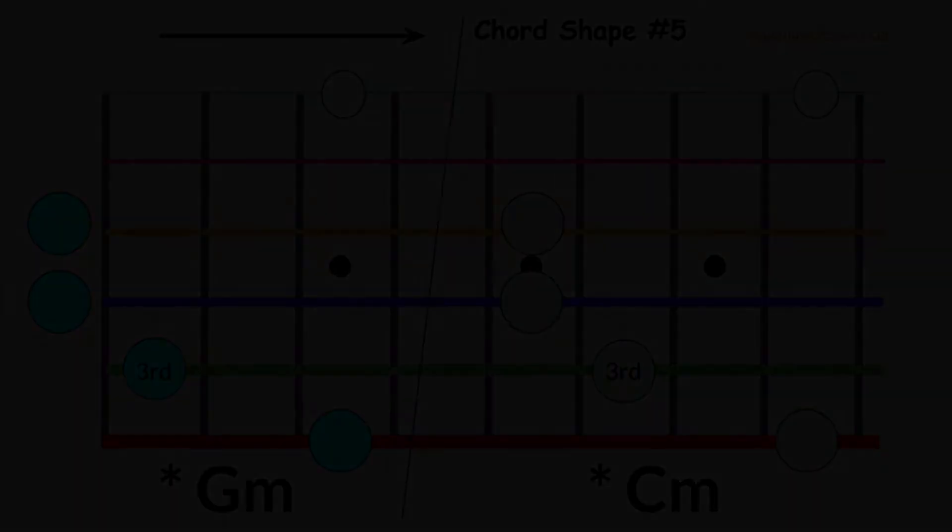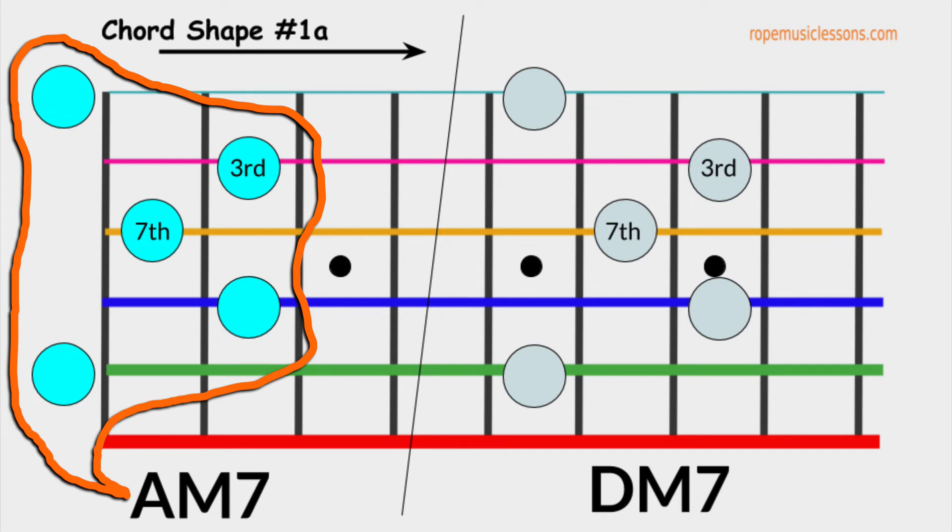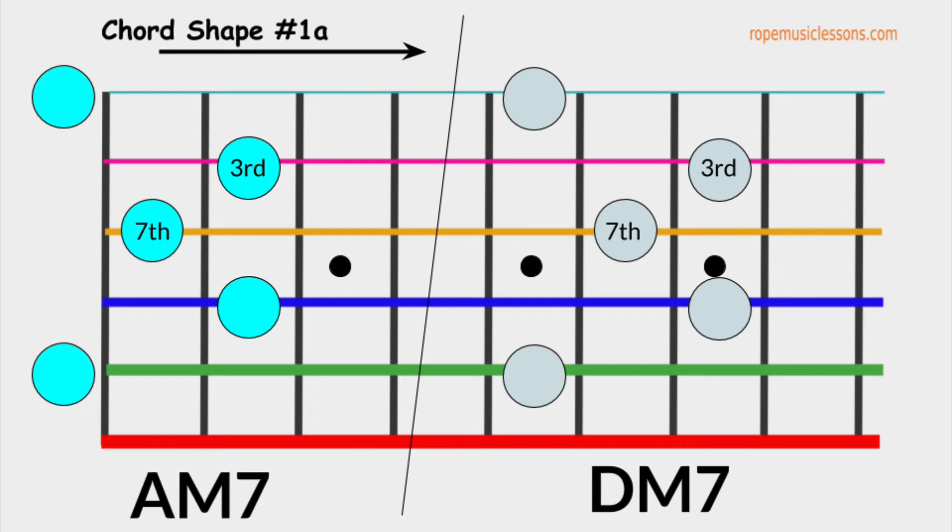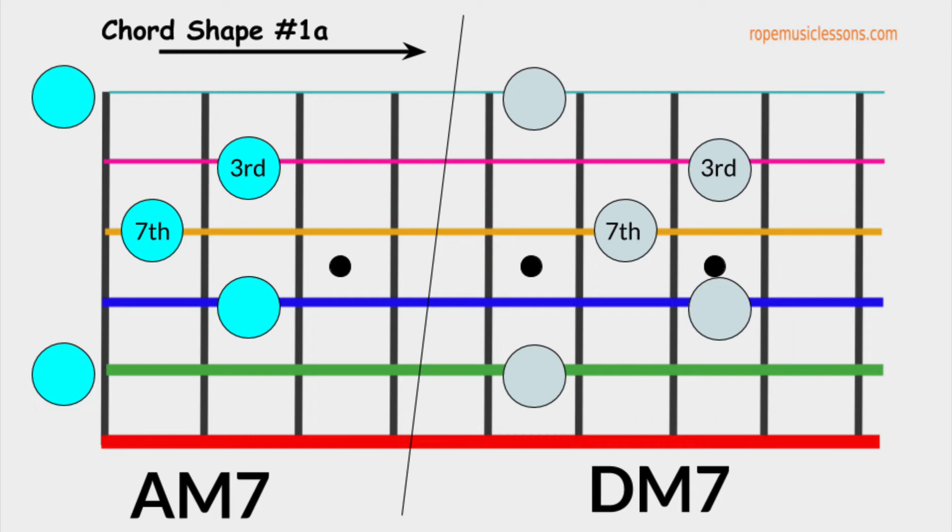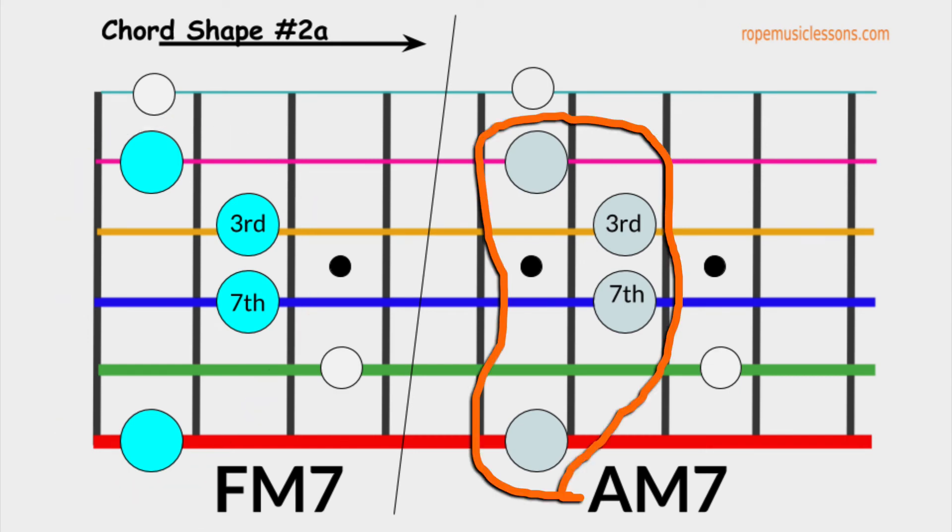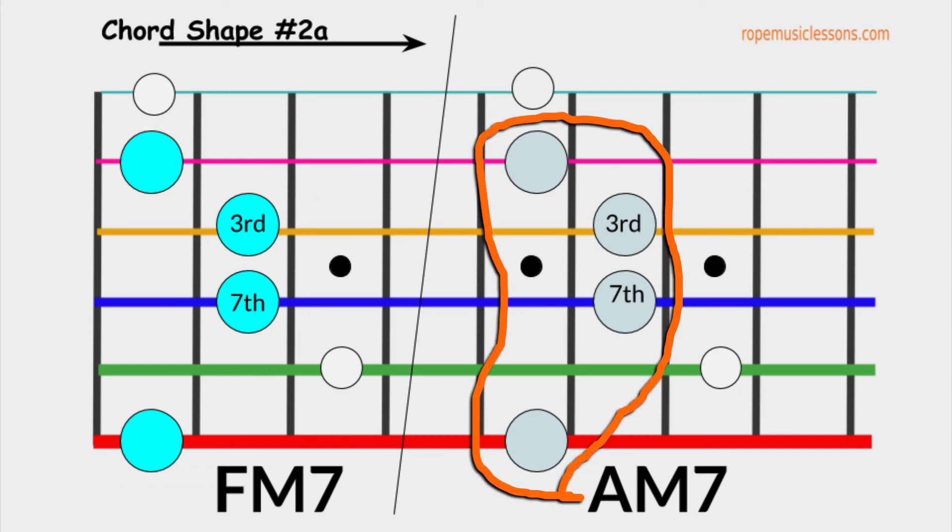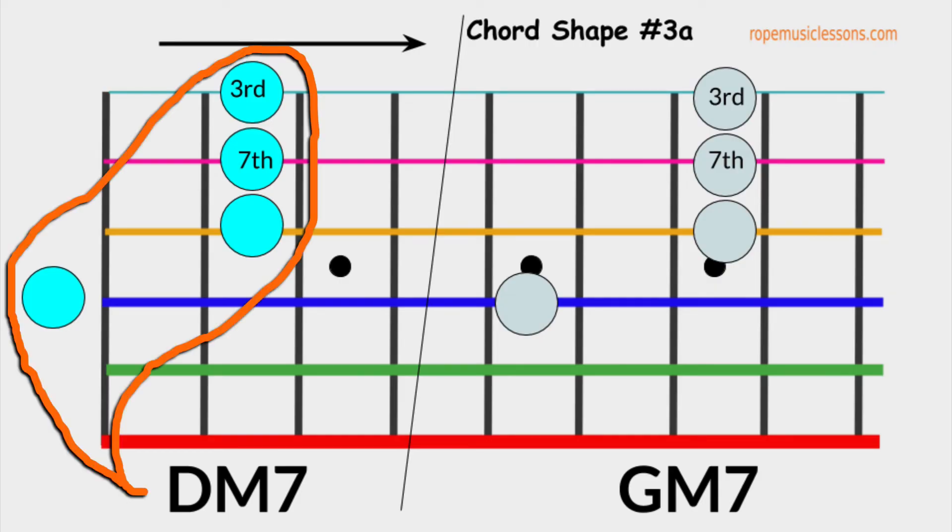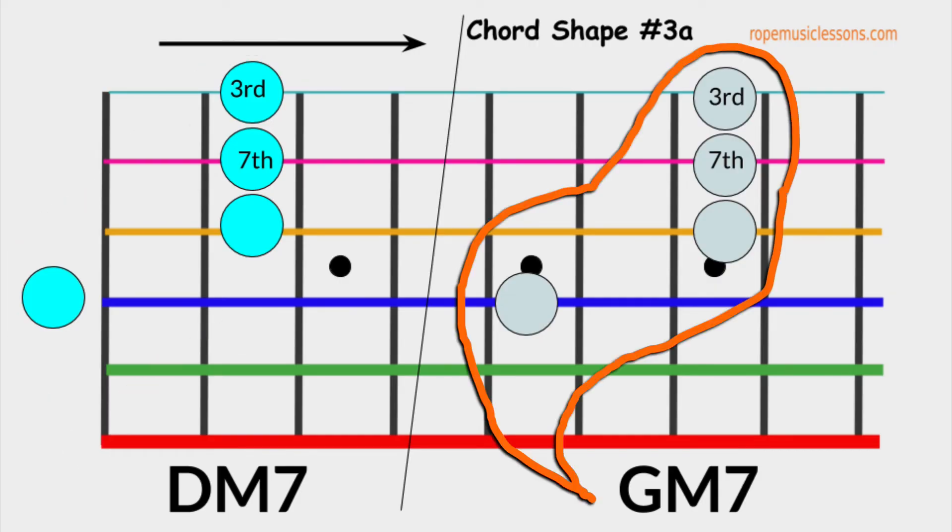Now, let's add the seventh chord. This is A major 7 and this is D major 7. This shape is derived from chord shape number one. So, I am going to call this chord shape number one A. This is F major 7 and A major 7. This chord shape is derived from chord shape number 2. Let's call this chord shape number 2A. This is D major 7 and G major 7. This chord shape is derived from chord shape number 3. Let's call this chord shape number 3A.